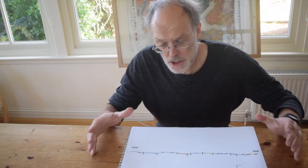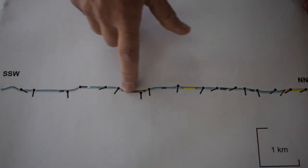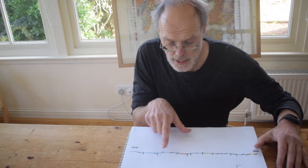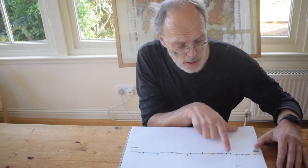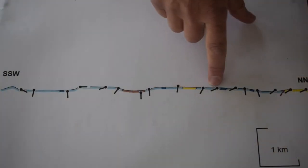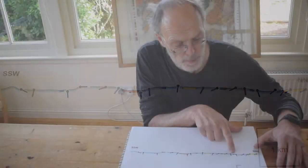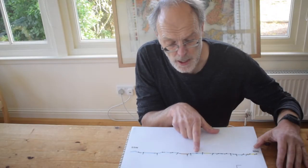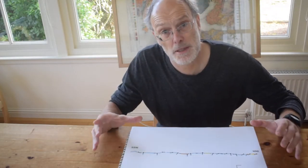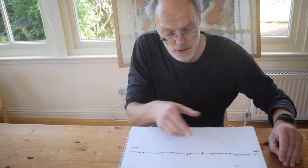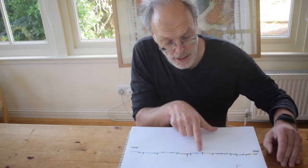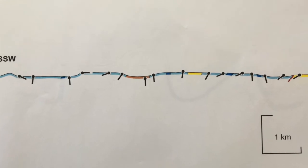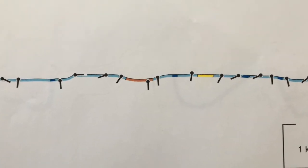We can see straight away that the bedding has variable orientation and that as we go across the profile, the same unit, for example this dark blue panel, appears several times. So put those two pieces of information together - the variable dip and the repetition in our transect of rock units - suggests that the succession involves folding.